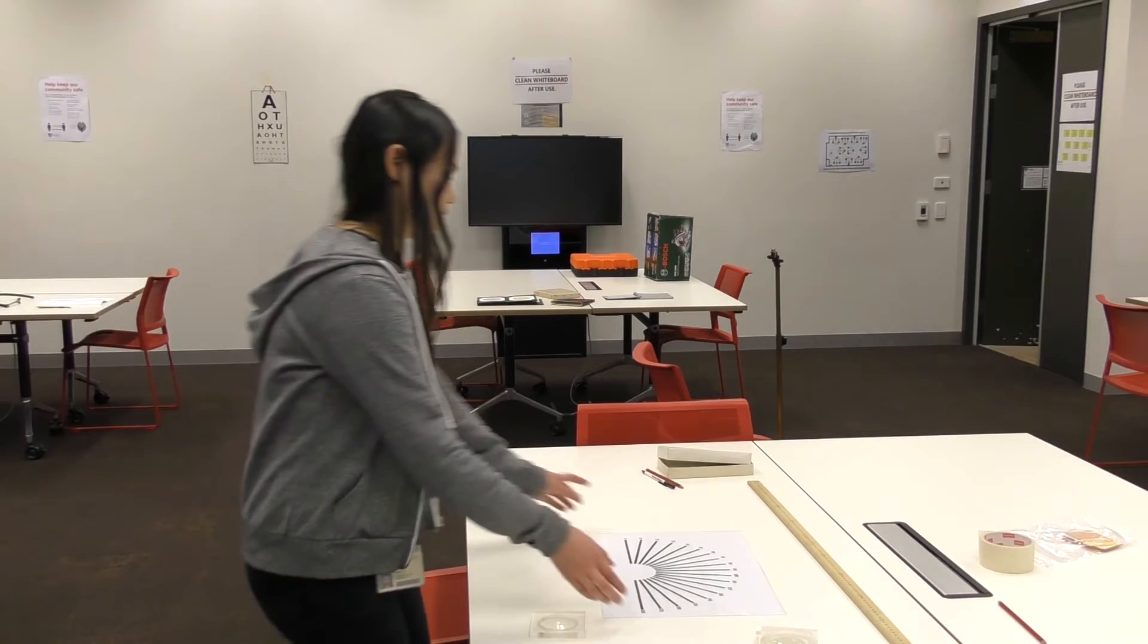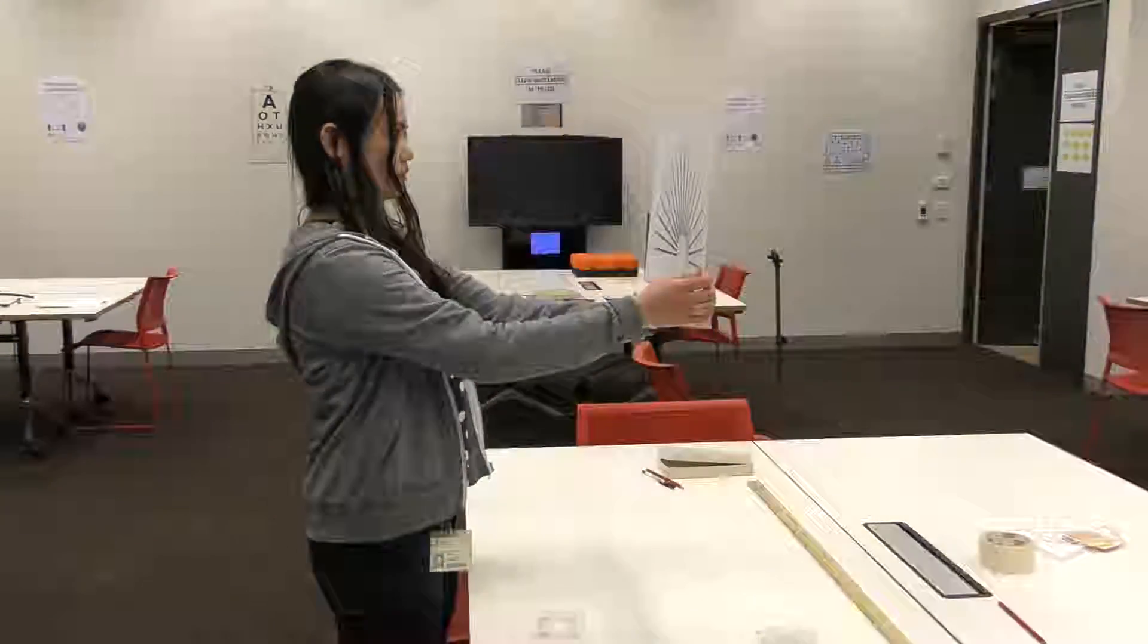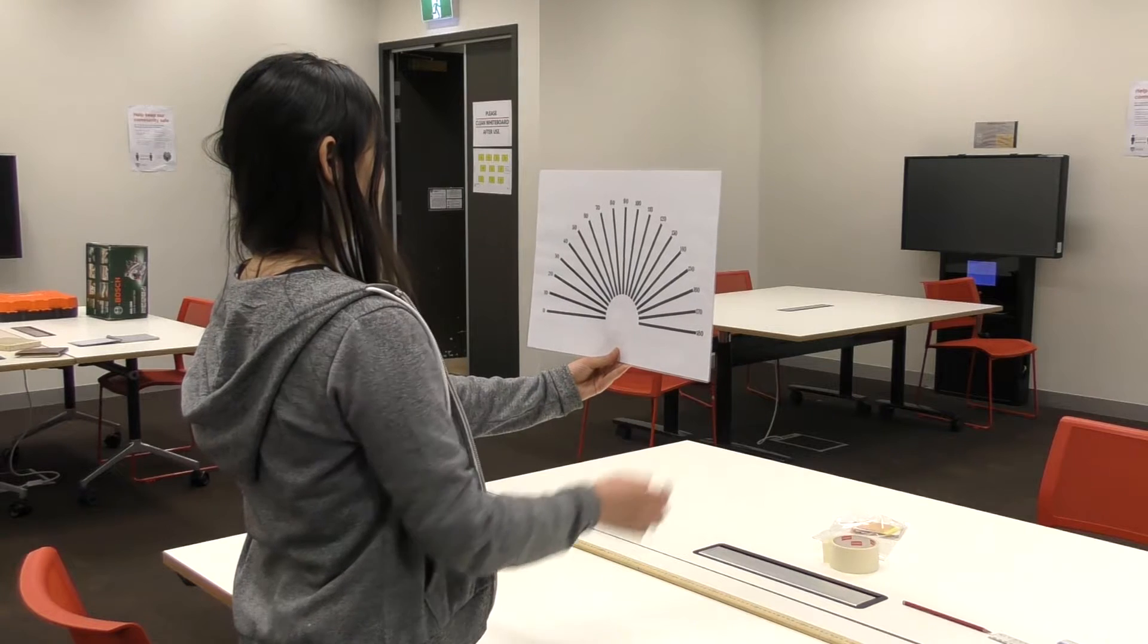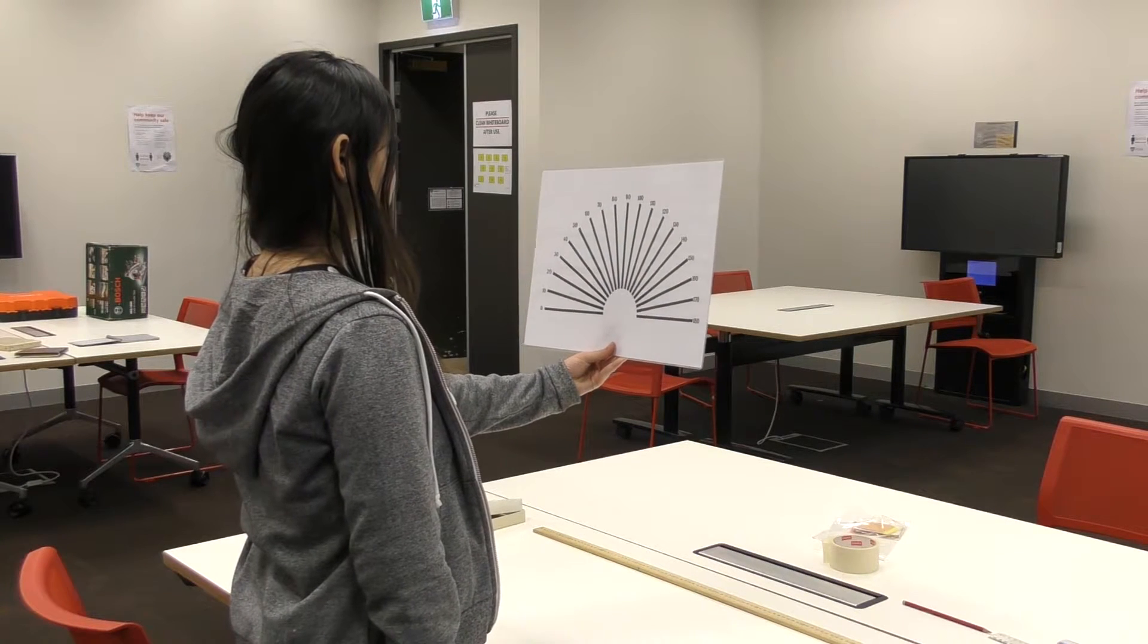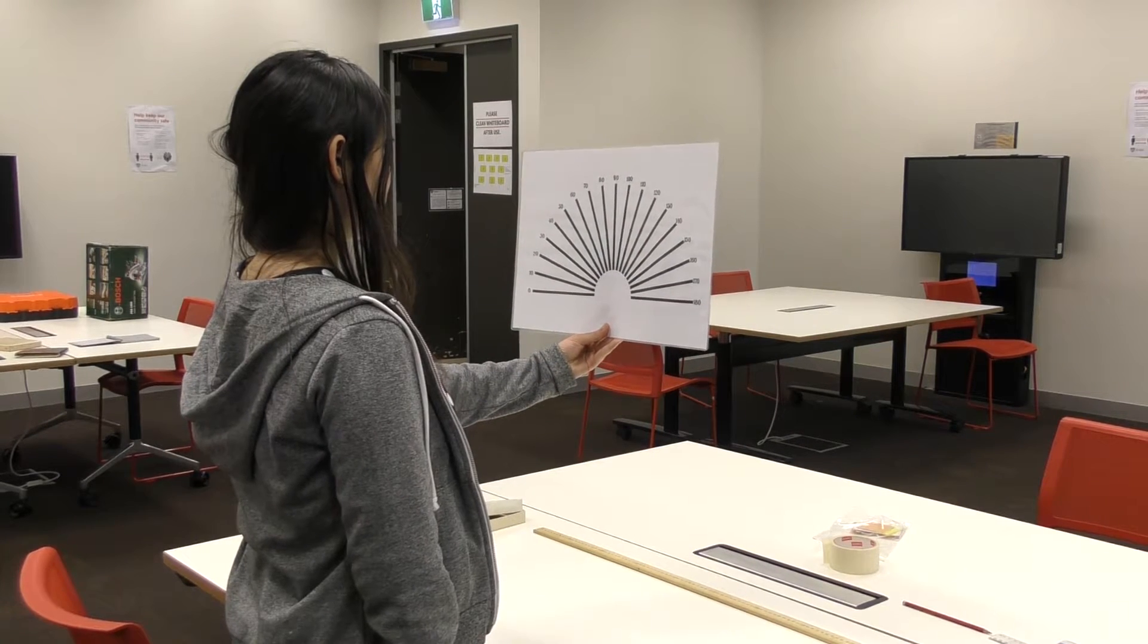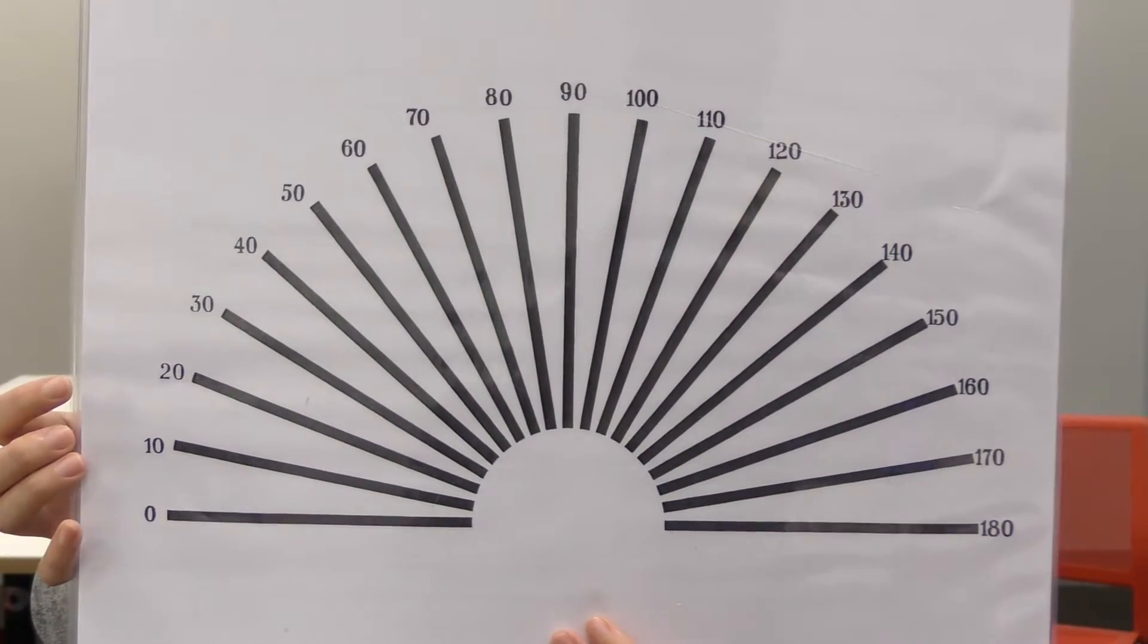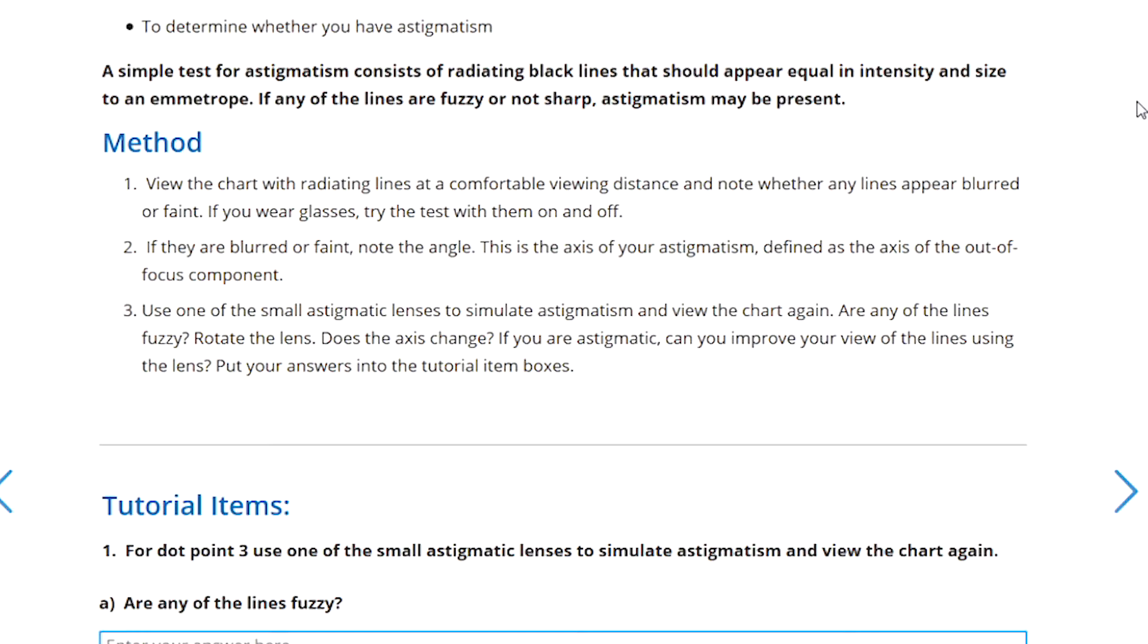Now we can examine for astigmatism by using a chart such as this which has a series of radiating lines at different angles and depending on your type of astigmatism different lines will appear in or out of focus. If any lines are blurry or faint then note the angle and this is the axis of your astigmatism as described in step 2 of the methods for this activity.